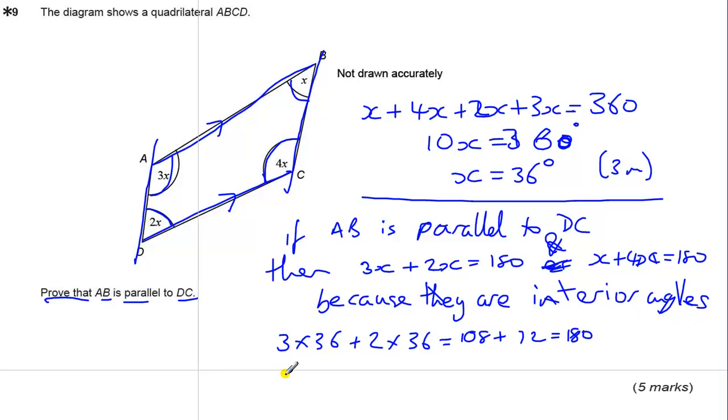Or you could have done the other one. You don't have to do both, but you could do the other one, which is 36 plus 4 times 36, which is 36 plus 144. That's also 180.